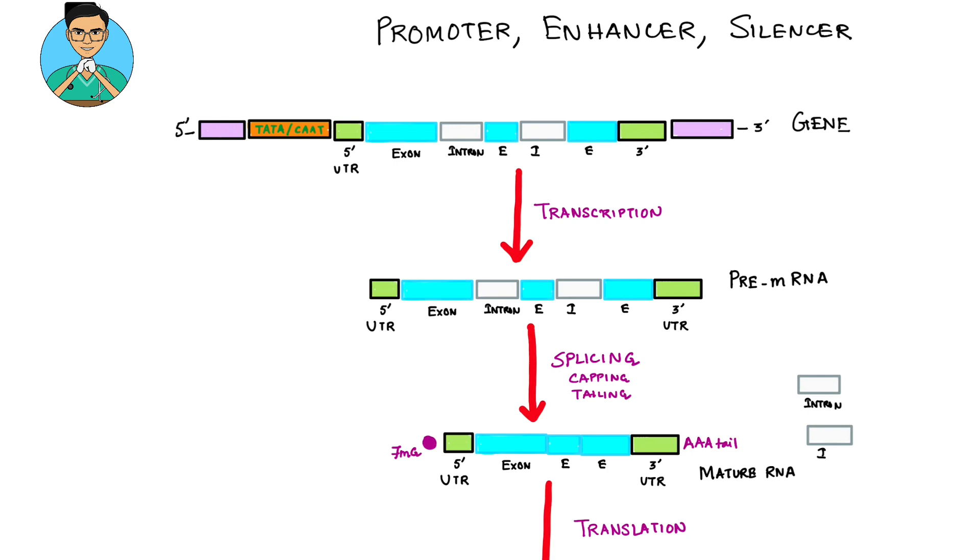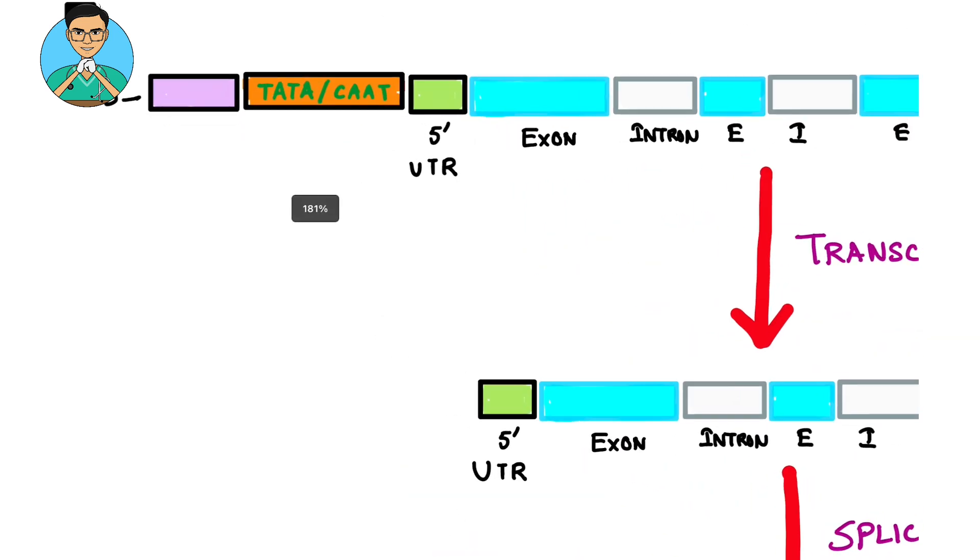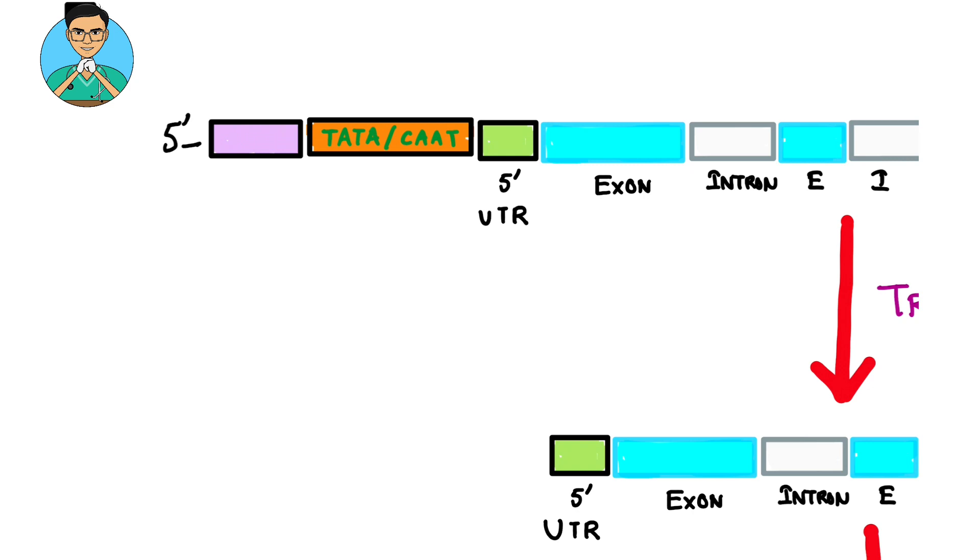Now in this eukaryotic gene, there will be a region of TATA box or CAAT box. That region will be known as a promoter.